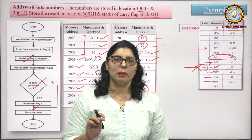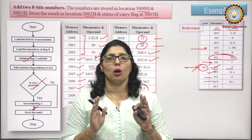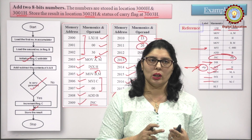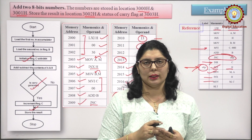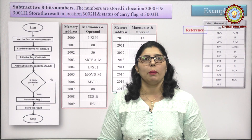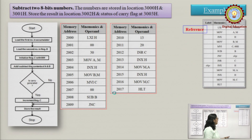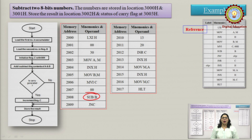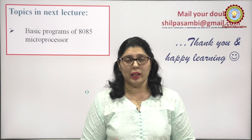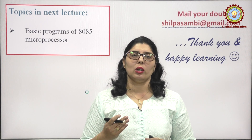I hope ki yahaan tak aapko ek point samajh mein aaya — why we need to understand the instruction word size of a particular mnemonic. Hame instruction word size jaanne ki zarurat isliye hai ki yahaan se aapko pata chalega ki kaun sa instruction single byte mein execute hoga, 2 bytes mein, ya 3 bytes mein. Accordingly aap us instruction ko utni memory allocate karenge. The subtraction example is also the same as addition, except the ADD instruction is replaced by subtraction.